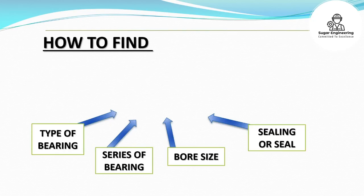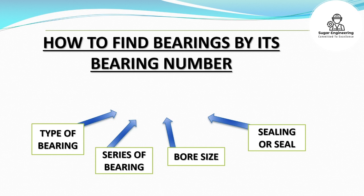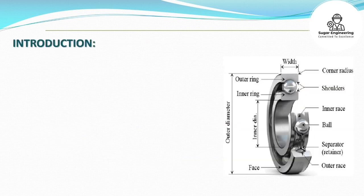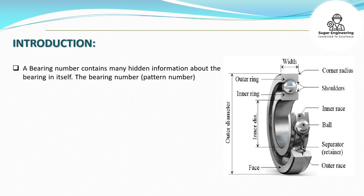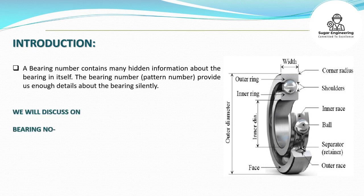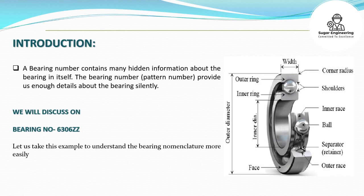How to find bearings by its bearing number. A bearing number contains many hidden information about the bearing in itself. The bearing number and pattern number provide us enough details about the bearing silently. We will discuss bearing number 6306ZZ and take this example to understand the bearing nomenclature more easily.